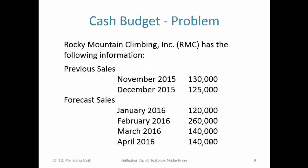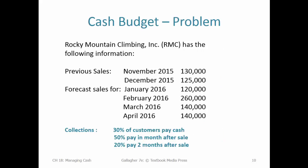Here's an example. We have a company called Rocky Mountain Climbing, and we have some sales history at the end of 2015, with a few months of data. Then we're forecasting for our next four months. There's a big jump in February — maybe that has something to do with people getting ready for the spring season. You've got to know the seasonality of your business and build that into the forecast.